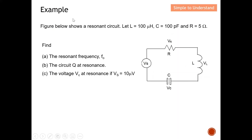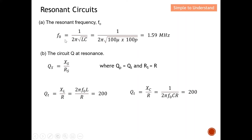Let's do an example. The figure shows a resonance circuit with L = 100 μH, C = 100 pF, and R = 5 Ω. First, calculate the resonant frequency. Since the formula is the same for series or parallel, I apply f₀ = 1 / (2π√(LC)) with my L and C values to obtain f₀ = 1.59 MHz.